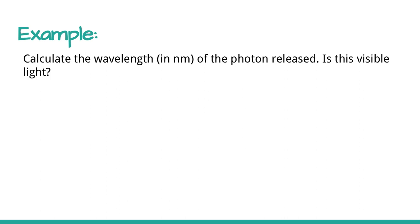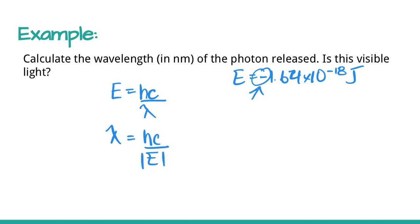A second part asks us to calculate the wavelength in nanometers of the photon released. If we want the wavelength, we've got this equation, energy equals hc over wavelength. If we rearrange, wavelength equals hc over energy. That energy value was negative 1.64 times 10 to the negative 18 joules. When putting it in here, this negative sign is just telling us that energy is emitted, so we're taking the absolute value because it doesn't make sense to have a negative wavelength.